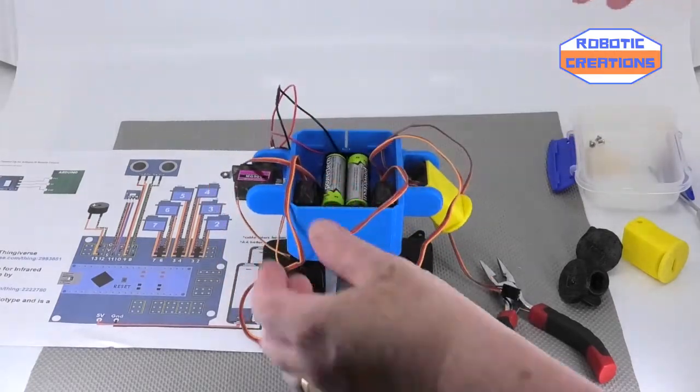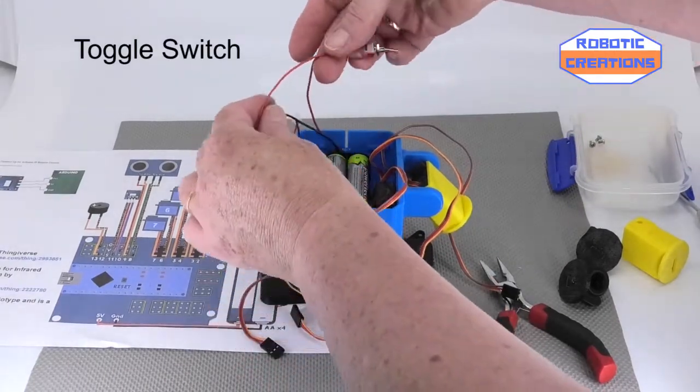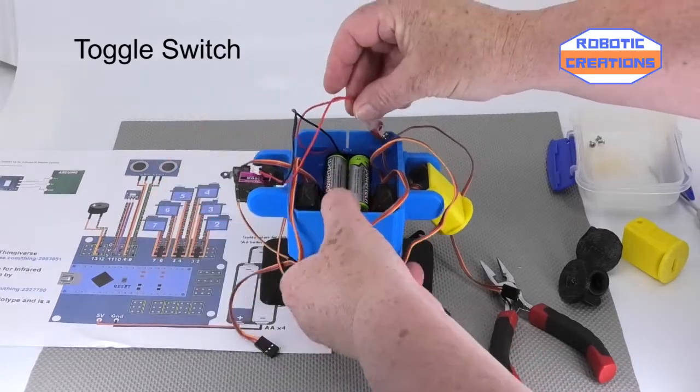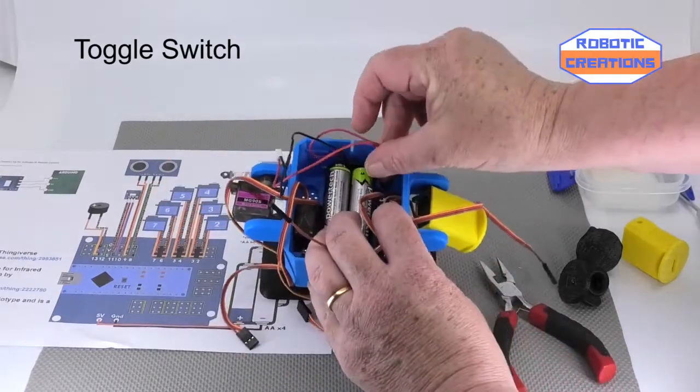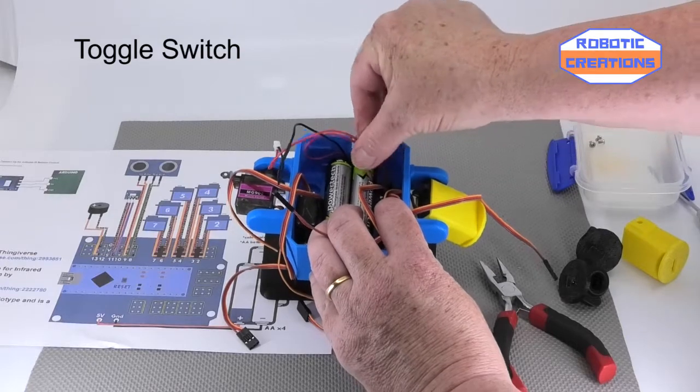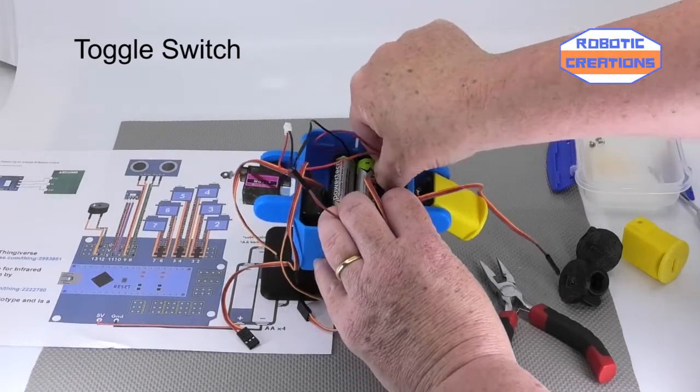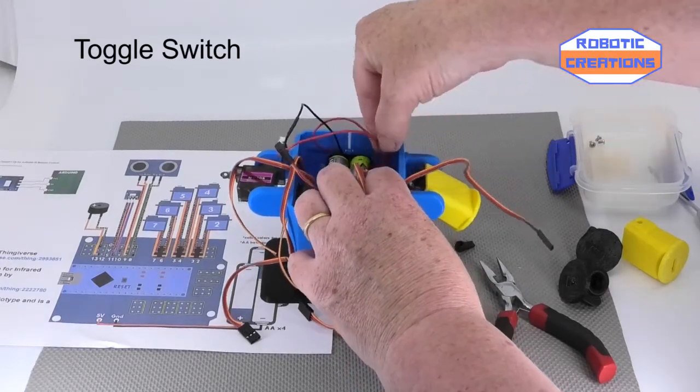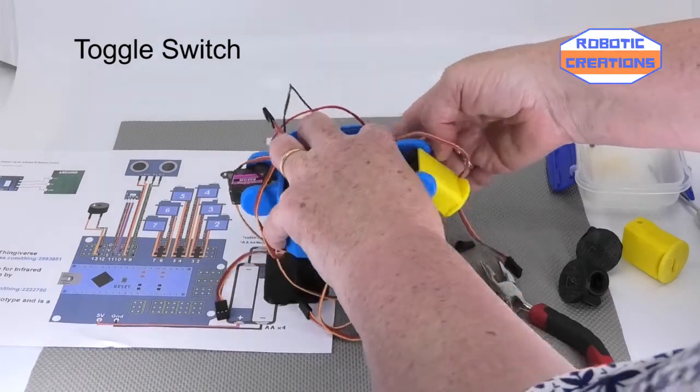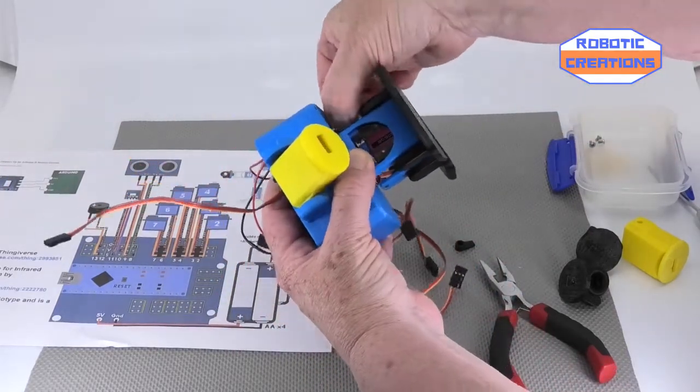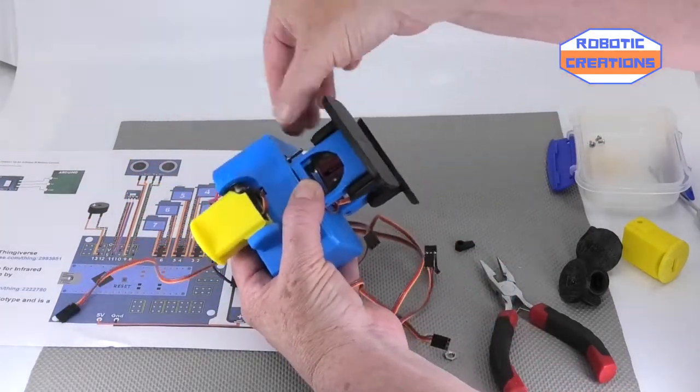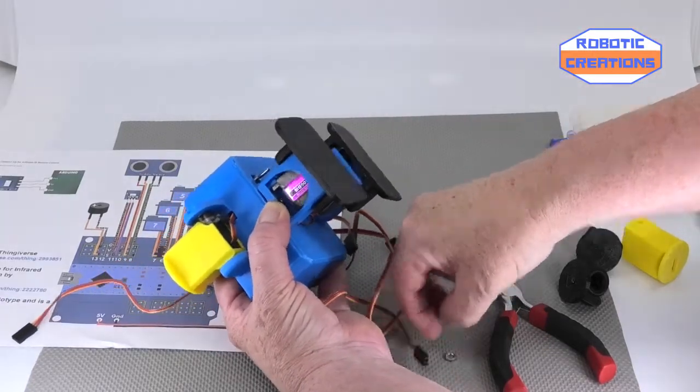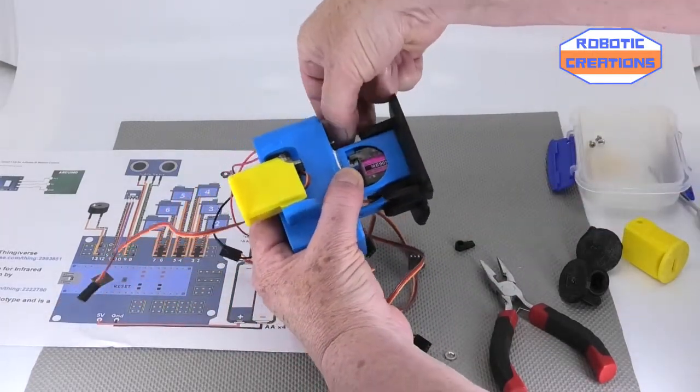Now we're going to get the switch, pop it down into the hole. It just takes a little bit to do that and you should have it through. See, so we're just going to slide that on.